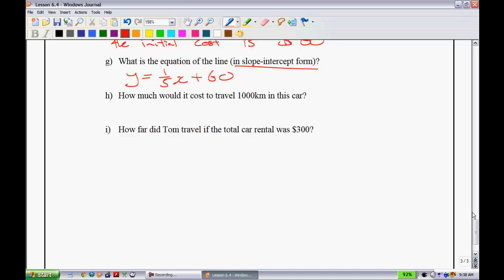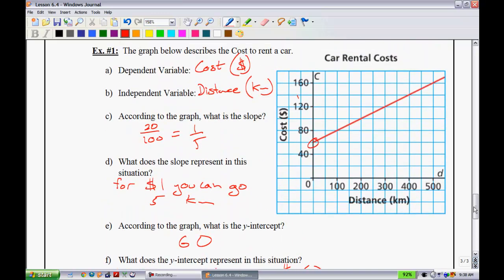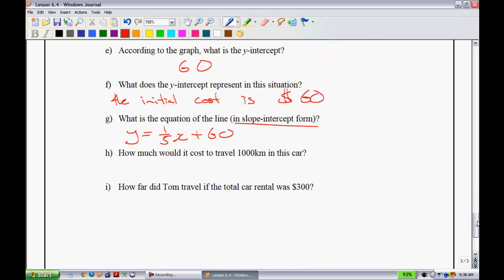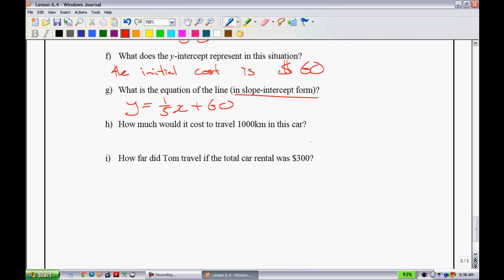How much would it cost to travel 1,000 kilometers? Well, if we look at our graph, notice that you can't tell. 1,000 is not on this graph. So this is an example where using algebra would be a better bet. I'm going to take my equation, y is equal to 1 fifth. Remember, 1,000 is going to be put in for x because x was the distance. So I have 1,000 plus 60. 1 fifth of 1,000 is 200. So that tells me that this is equal to $260. That's how much it will cost me if I want to go 1,000 kilometers with this vehicle.